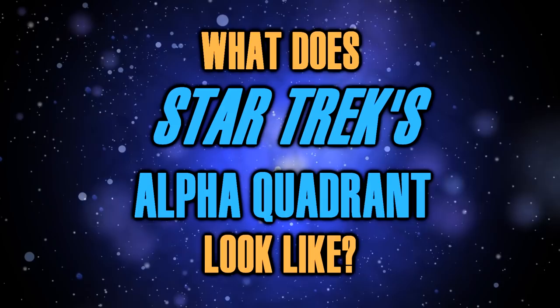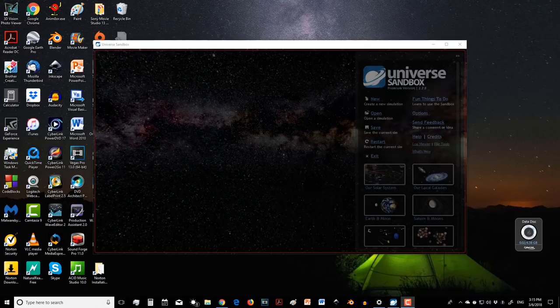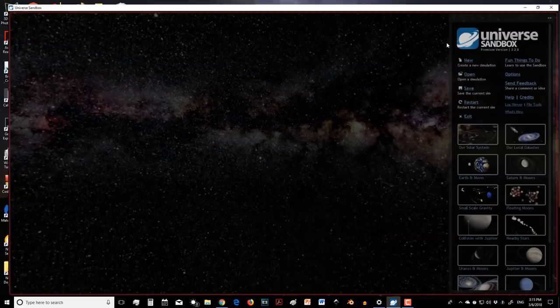So today I'm going to try to answer the question: what does Star Trek's Alpha Quadrant look like? Over the past few years, in addition to making awesome videos for YouTube, I've also tried to figure out what exactly a 3D representation of the Alpha Quadrant would look like. Today I'm going to be using Universe Sandbox to help us create our visualization.